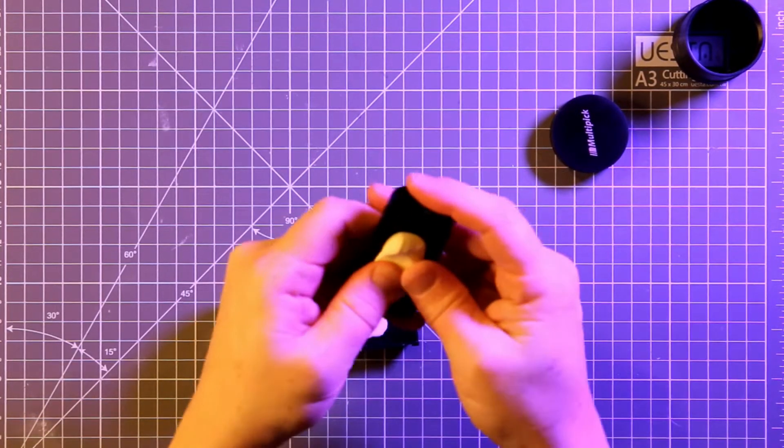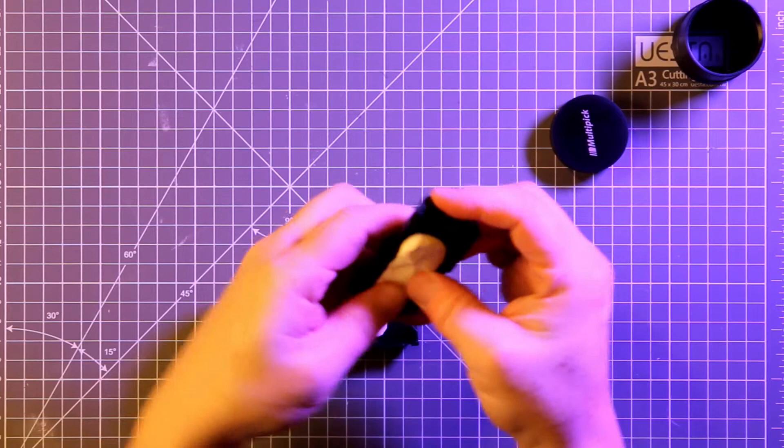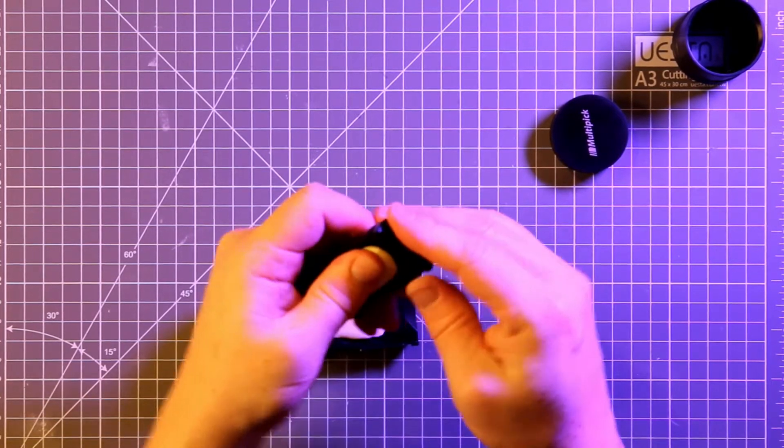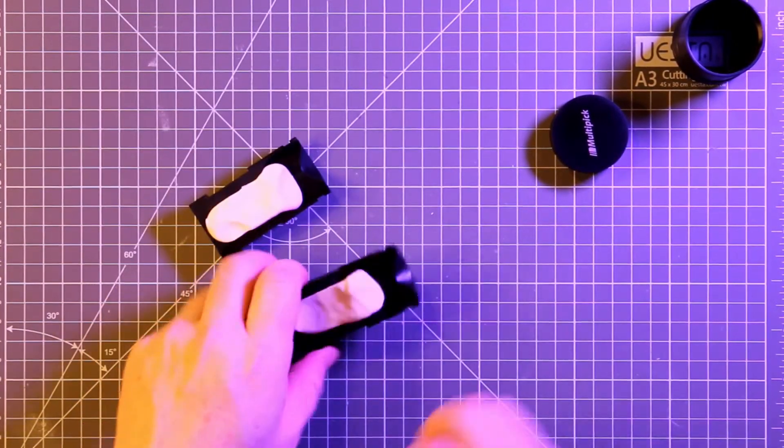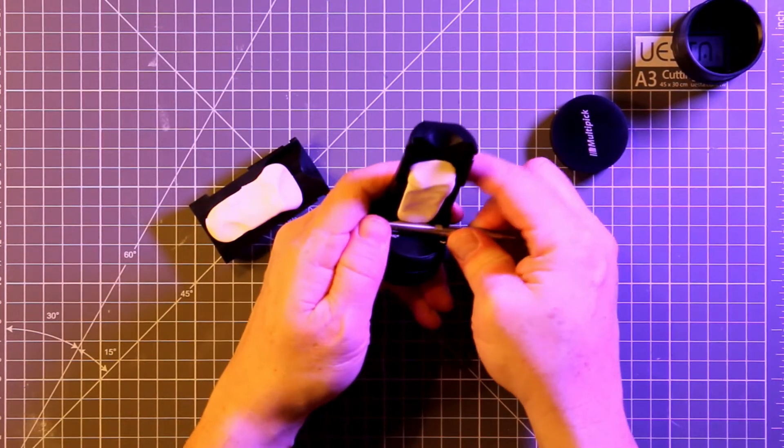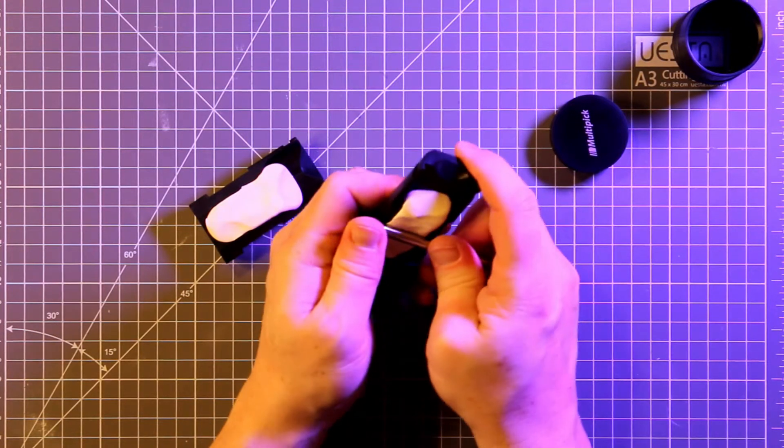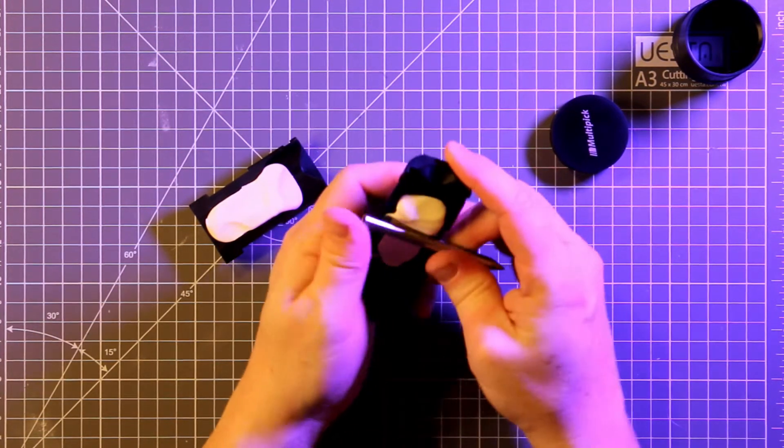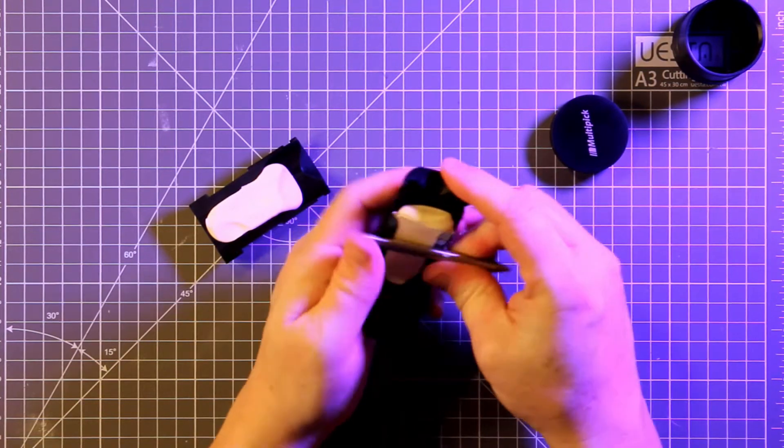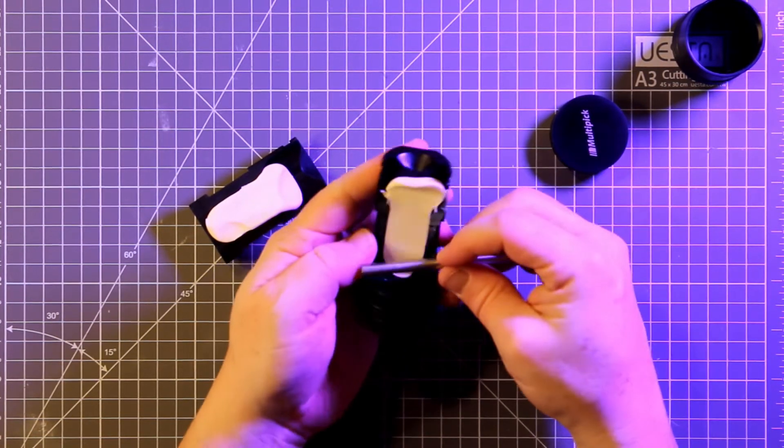This is the part that you really want to get right and take your time with. I'm just pushing it into place and then using something metal to smooth out and make sure that the surface is really smooth and there are no imperfections on the surface because that's really going to affect the quality of our impression.